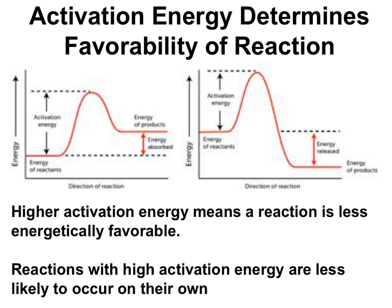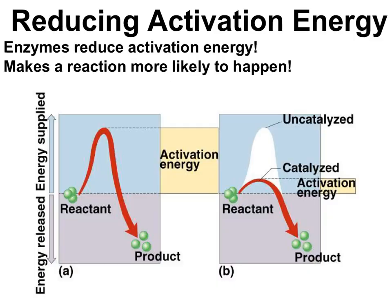We've talked about what activation energy is and what it means. Why it's important to living things is because many chemical reactions have high activation energy. A higher activation energy means a reaction is less energetically favorable — less likely to occur on its own. But chemical reactions need to happen all the time, as organisms are constantly breaking down and building up molecules. In order for reactions to happen at the speed living organisms need, the activation energy needs to be reduced. This is where enzymes come into play.